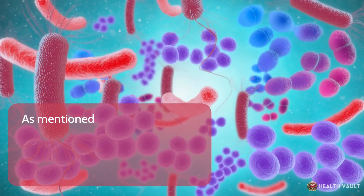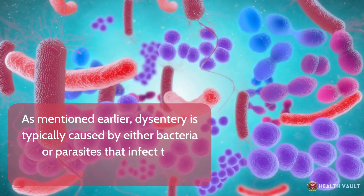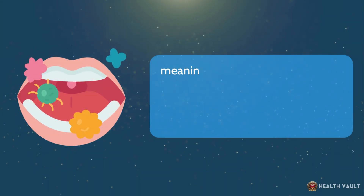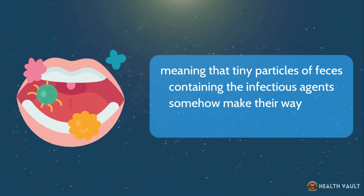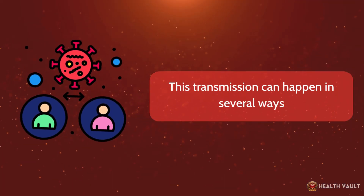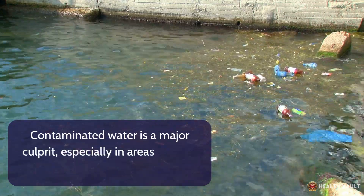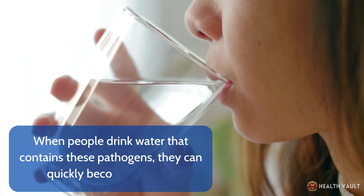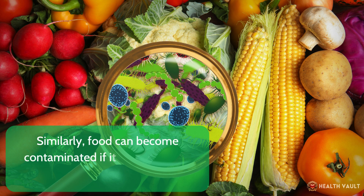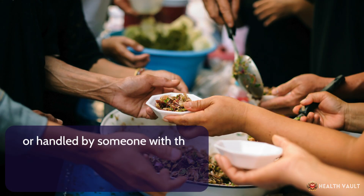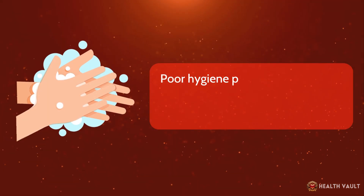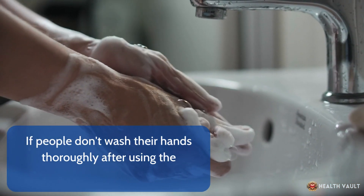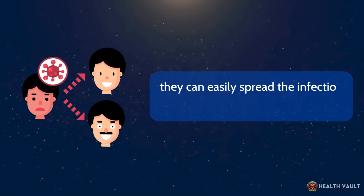Dysentery is typically caused by either bacteria or parasites that infect the intestines. These pathogens are usually transmitted through the fecal-oral route, meaning that tiny particles of feces containing the infectious agents somehow make their way into a person's mouth. Contaminated water is a major culprit, especially in areas without proper water treatment facilities. Similarly, food can become contaminated if it's washed with contaminated water or handled by someone with the infection who hasn't properly washed their hands. Poor hygiene practices significantly contribute to the spread of dysentery.